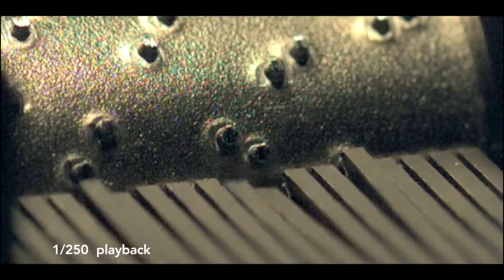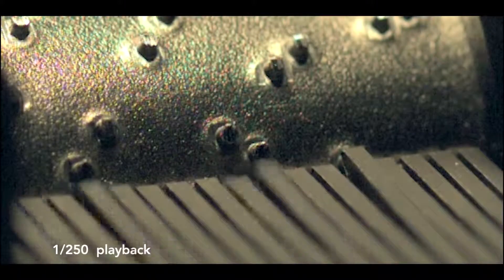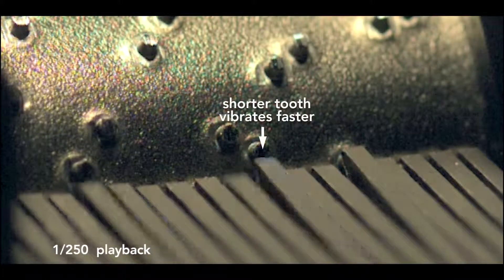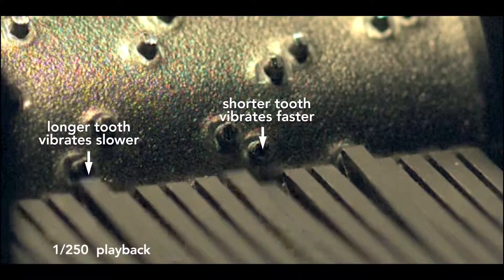The comb works like a multi-pronged tuning fork. In this high-speed video, slowed by 250 times, the drum appears not to move, but you can see the teeth vibrate. The shorter tooth is vibrating faster than this longer one. These vibrations produce the sound.